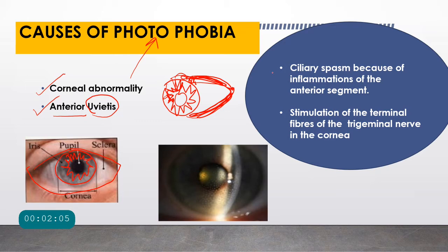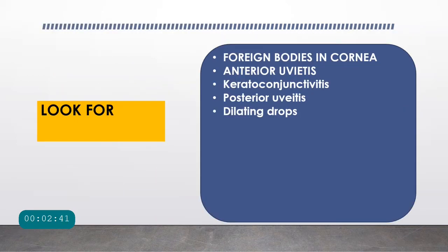Why does photophobia happen? Whenever the ciliary body gets inflamed, there will be ciliary spasm, and that spasm of the ciliary body causes photophobia — increased sensitivity to light. Similarly, the cornea has a very rich nerve supply coming from the trigeminal nerve. When those nerve fibers get stimulated due to corneal pathology, there will be increased sensitivity to light, which causes photophobia. So when a patient complains of photophobia, look for abnormalities in the cornea and in the anterior uveal tract.